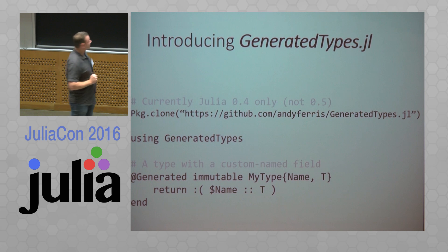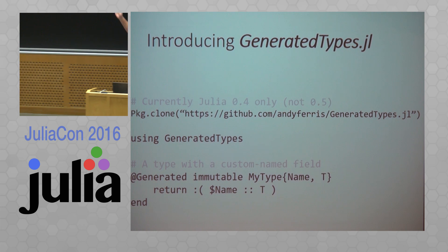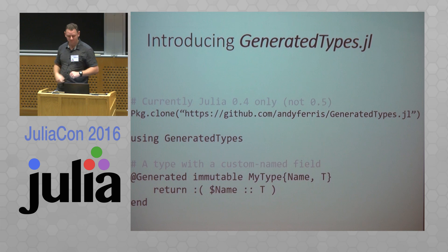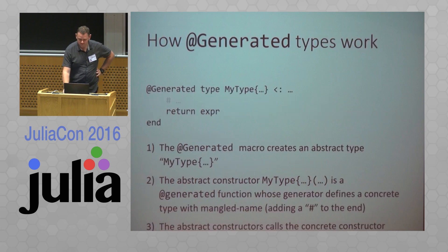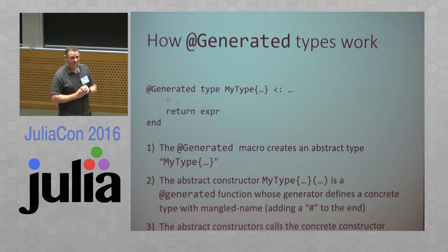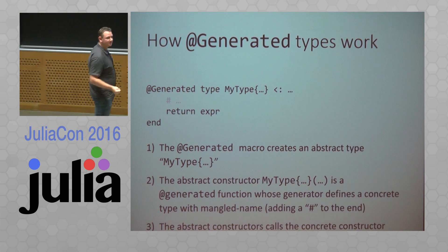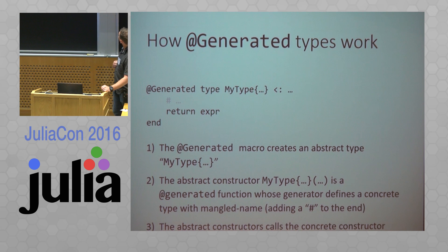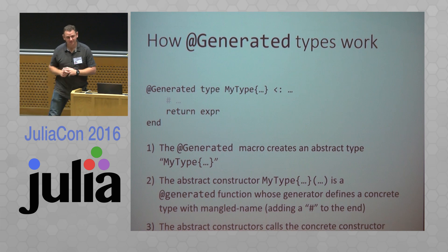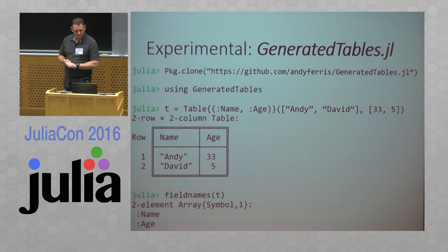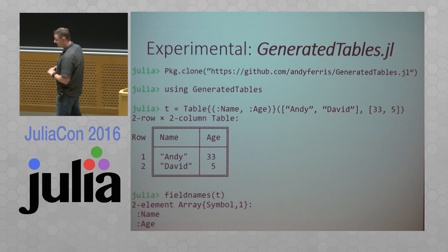I hacked together this thing called GeneratedTypes.jl and it works like a generated function, except with a capital G because we're using types. Like a generated function, the body of the thing returns an expression block that it would splat into some other type — it creates some leaf type, which is some concrete type, dynamically with a generated function. When you run this first capital-G Generated macro it creates an abstract type, and when you use that as a constructor the constructor is a generated function which creates a name-mangled concrete type with no parameters, and then refers to the concrete type's constructor.